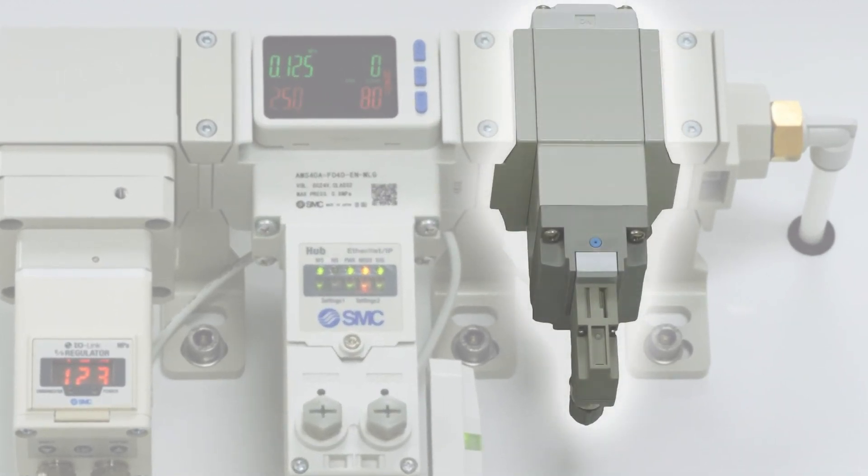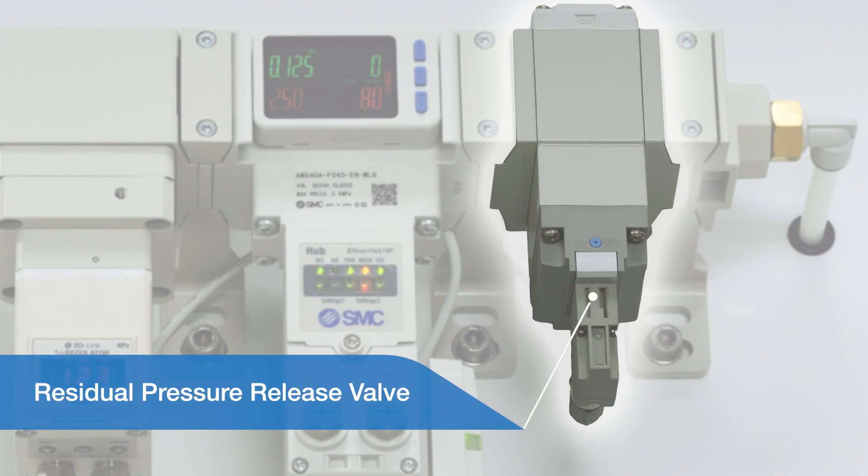The final component is the residual pressure release valve. This can be used to isolate and vent the air supply downstream of the air management system if required.